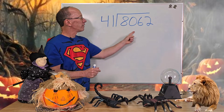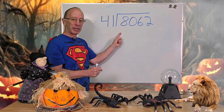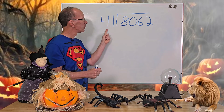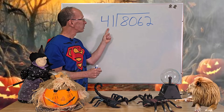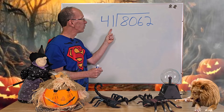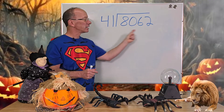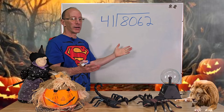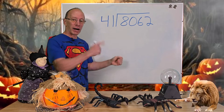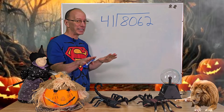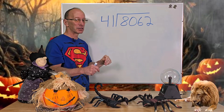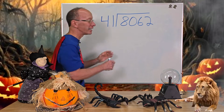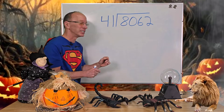We have a really big problem right here. Look at this number — we need to be able to put 41 into this number, this four-digit number. How do we get started? Well, I'll show you. It's going to be easy, cheesy, lemon squeezy, and we're not going to make it too scary here on our Halloween special.